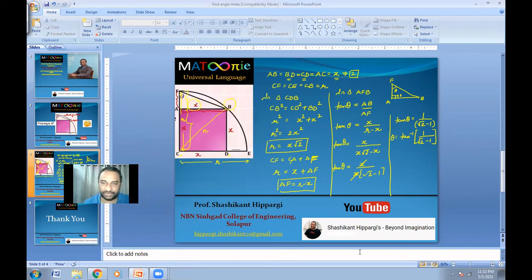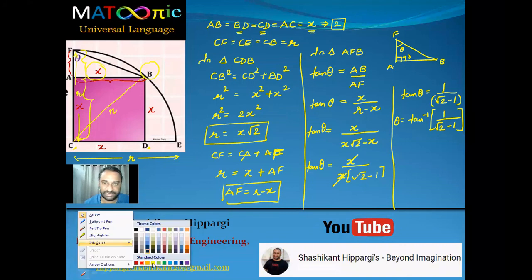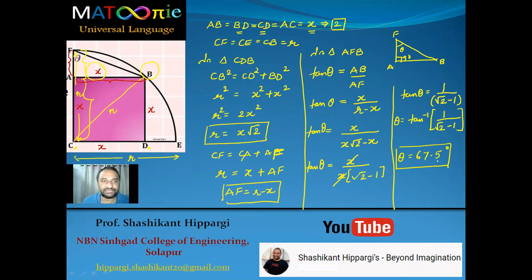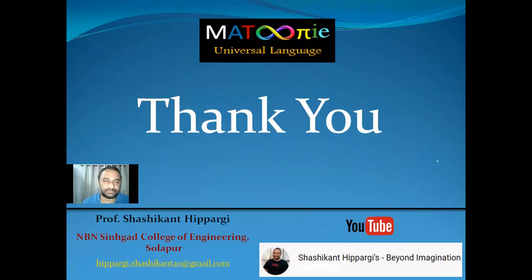So finally theta = 67.5°. The question was straightforward — we used a combination of the Pythagorean theorem and trigonometric functions. We assumed the side of the square as x. There were two unknowns: the radius and the side of the square. The problem was set up so we could form two equations and solve for both variables, giving us theta.